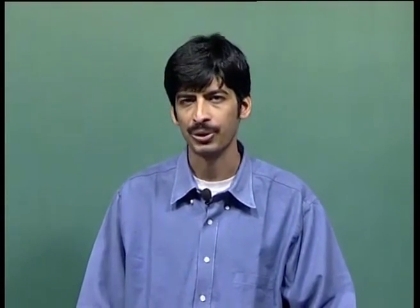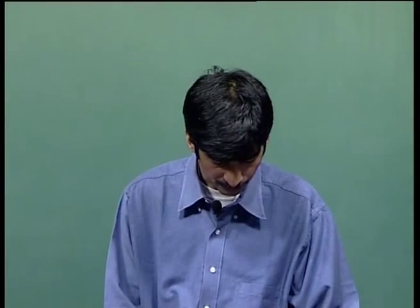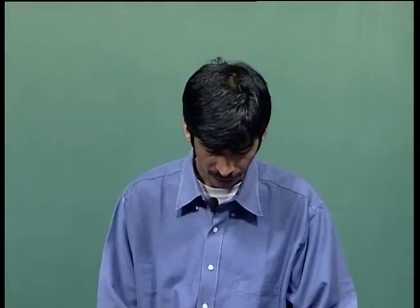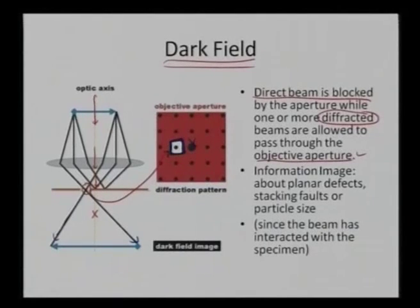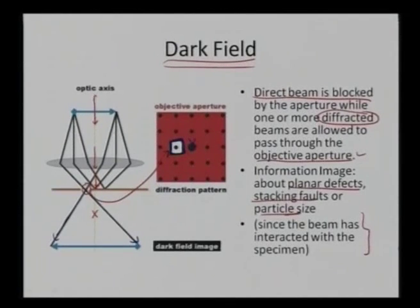The information coming from the dark field image comes only from the particular planes or crystallites which have given rise to that diffracted spot. Only those features will tend to appear bright because we are able to capture that diffracted beam. In dark field imaging the field is totally dark and features appear very bright, because we catch the beam which has been diffracted from a particular feature. We can get information about planar defects, stacking faults, or even particle sizes.